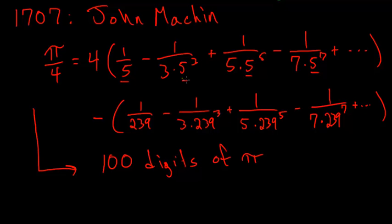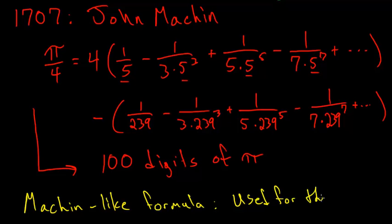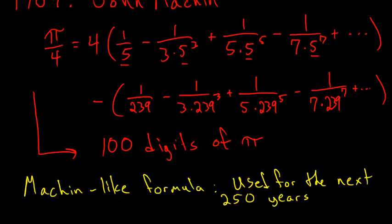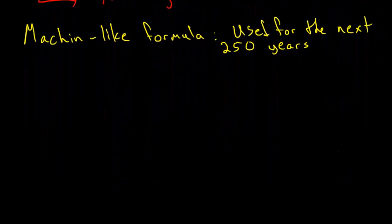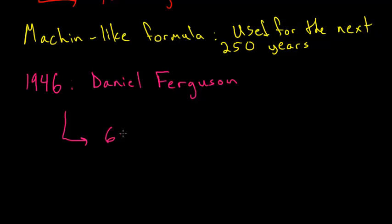After Machin, many people were able to make slight variations of this formula, which they started to call Machin-like formulas, and these were used for the next 250 years. The use of these formulas culminates in the year 1946, when the mathematician Daniel Ferguson, using Machin-like formulas, finds 620 digits of pi.